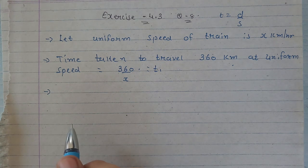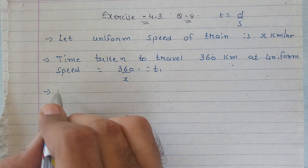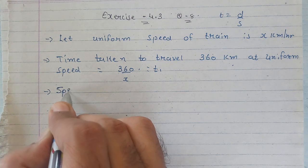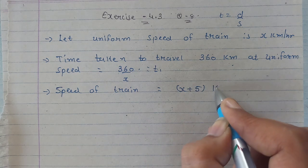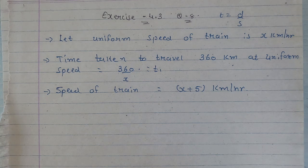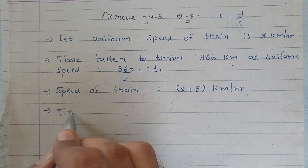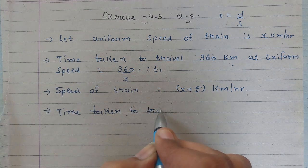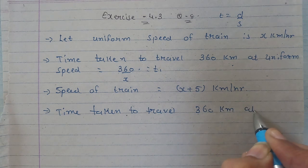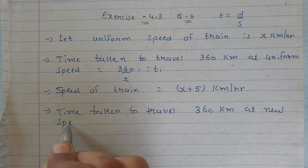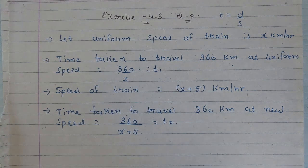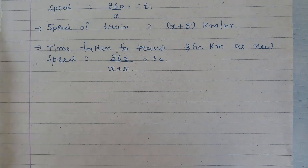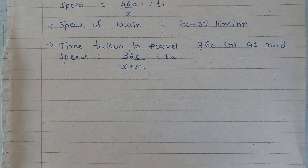اب train کی speed بڑھا دیتے ہیں 5 kilometer per hour۔ Now speed of train will be x plus 5 kilometer per hour. اگر یہ speed x+5 ہو جائے تو time taken to travel 360 km at new speed will be distance upon speed، یعنی 360/(x+5) — ہم اسے t2 کہتے ہیں۔ So t1 = 360/x اور t2 = 360/(x+5)۔